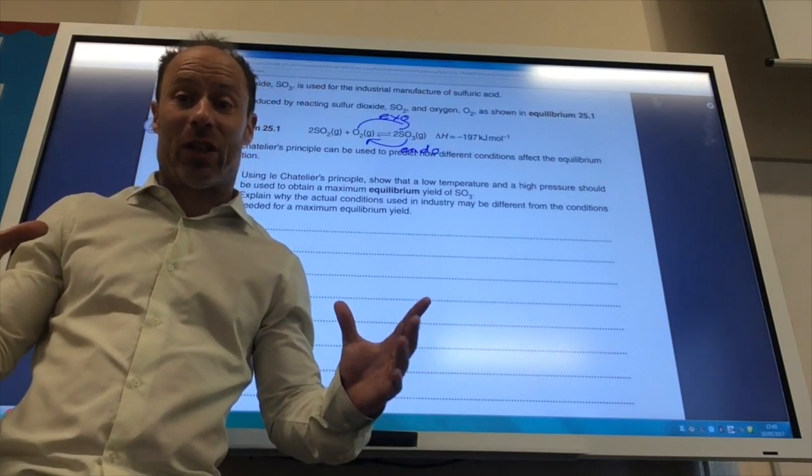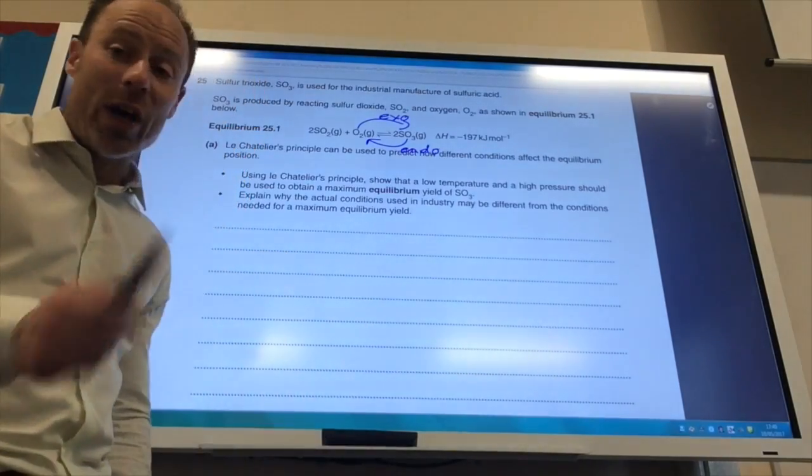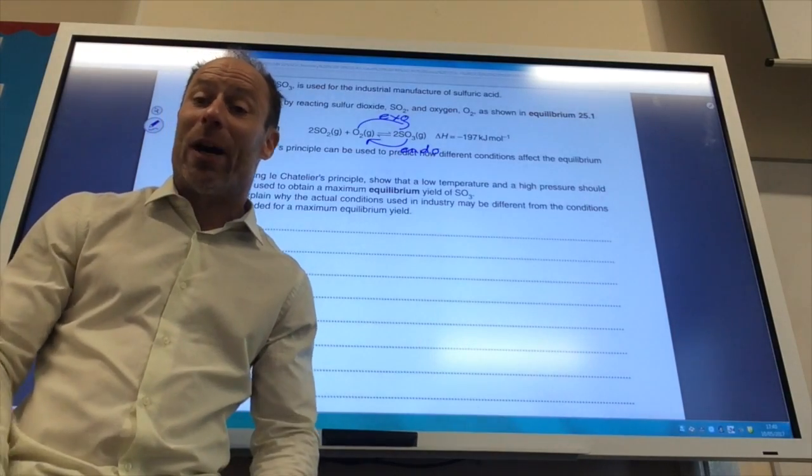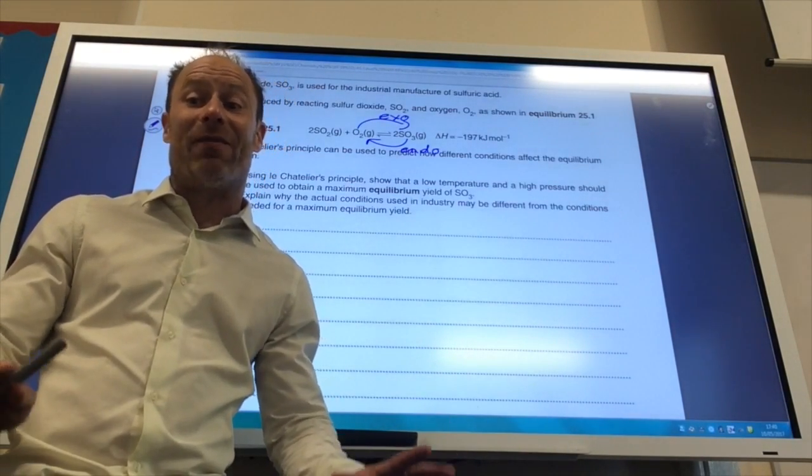So an increase in pressure pushes the equilibrium to the right-hand side. Now, why may we not use those reaction conditions in real life? Well, if I've got a low temperature, it means that the rate is very, very slow.